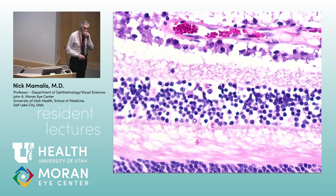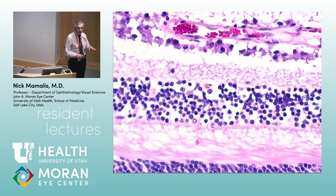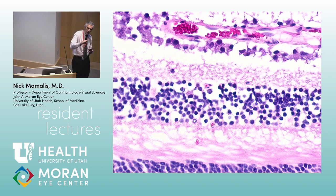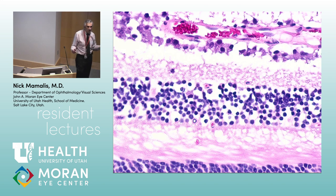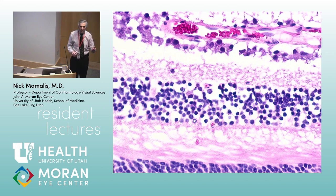This layer is called Henley's layer — important because in CME you get that flower-petal pattern. That's where the edema forms when you have cystoid macular edema, because Henley's layer fibers run obliquely to connect to those ganglion cells. In the peripheral retina it's different — you may have a hundred rods hooked up to one single ganglion cell.